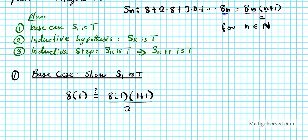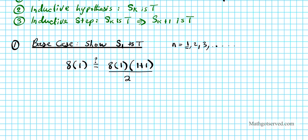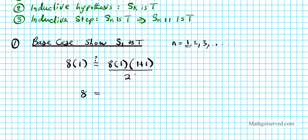Why are we starting with 1? Because the first positive integer is 1 — so n is 1, 2, 3, and so on. Now let's see if this is a true statement. 8 times 1 is 8. On the right side, we have 8 times 2 over 2; the 2's divide out, giving us 8 equals 8. So our foundation is solid — the base case is true.